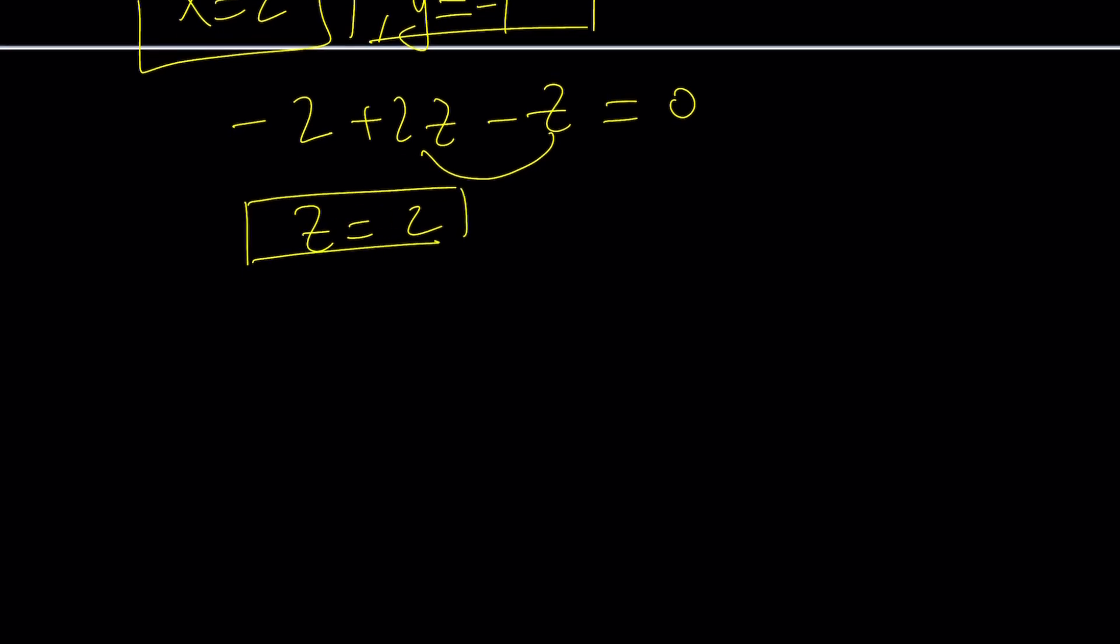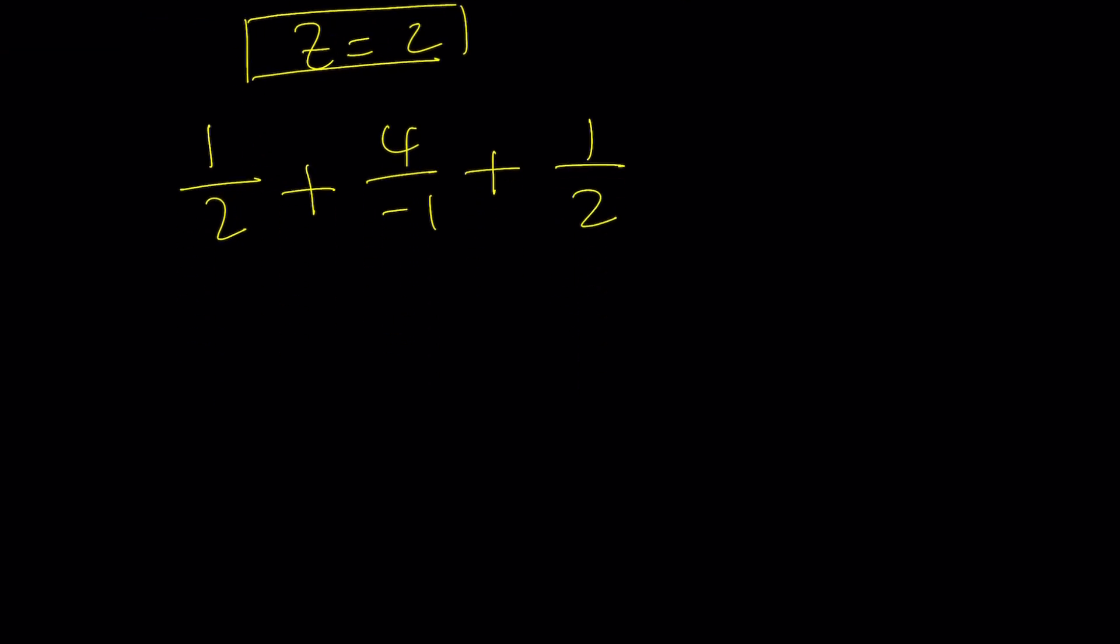Now we're going to have x plus y, which is 1, over z, which is 2. And then we're going to have x plus z, which is 4, divided by y, which is negative 1. And then y plus z, which is 1, divided by x, which is 2. Great. This gives me 1 half minus 4 plus 1 half. Obviously, 1 half plus 1 half is 1. 1 minus 4 is negative 3.